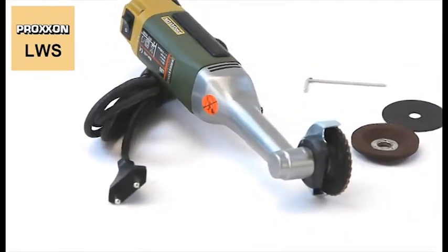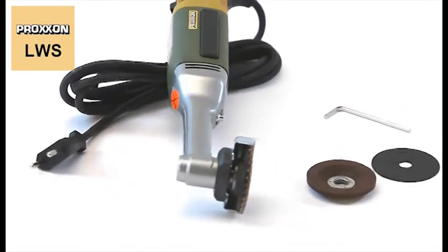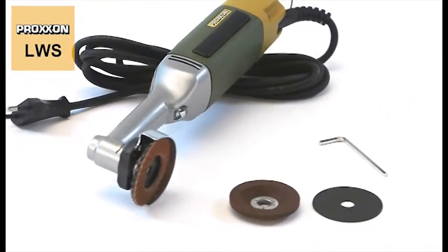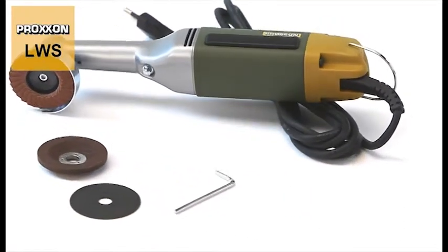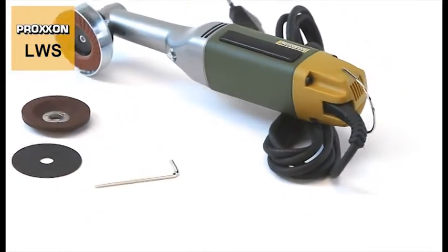The scope of delivery includes a high grade corundum grinding disc, a fan sanding disc and a fabric reinforced cutting disc. A matching allen key for easy replacement is also included.